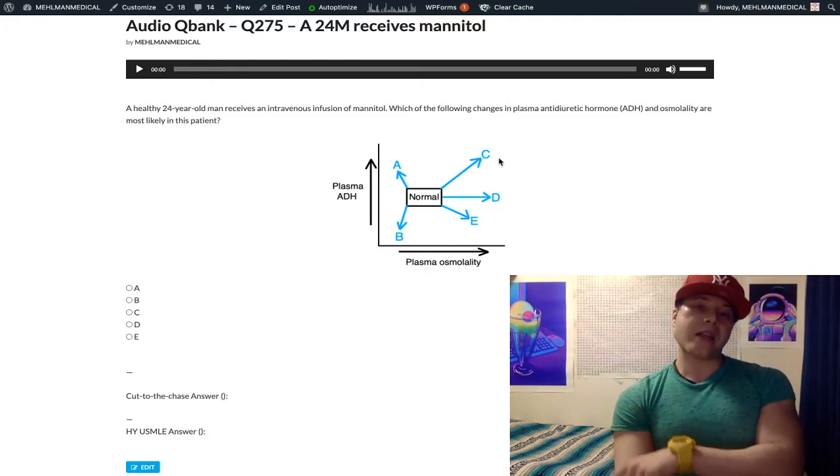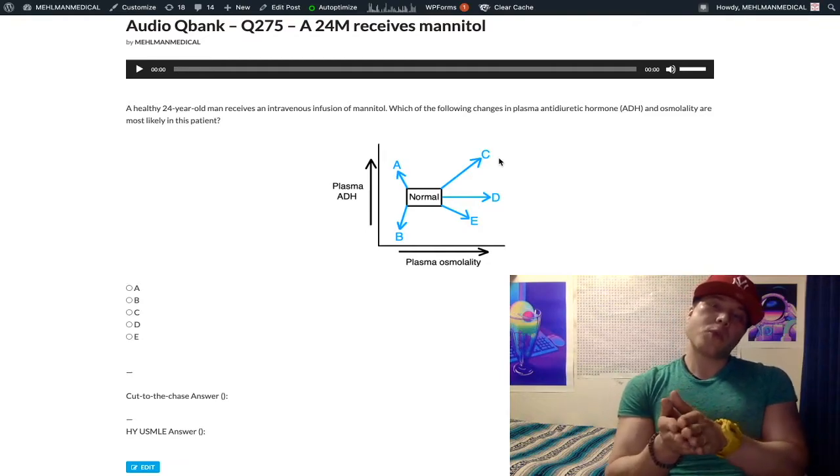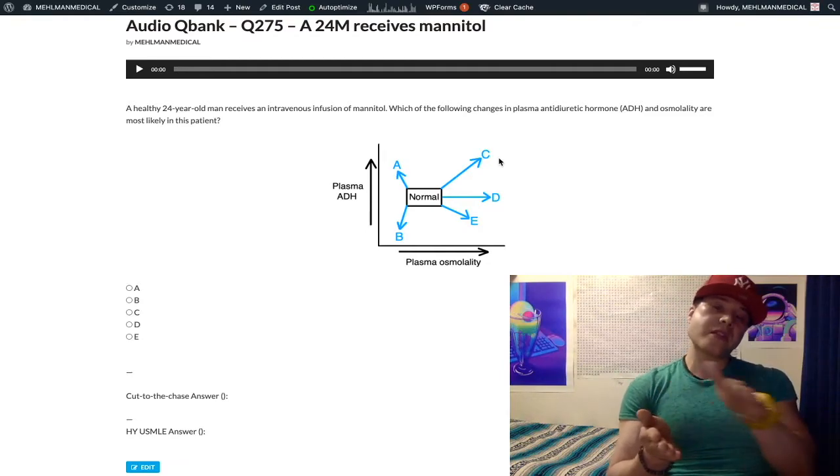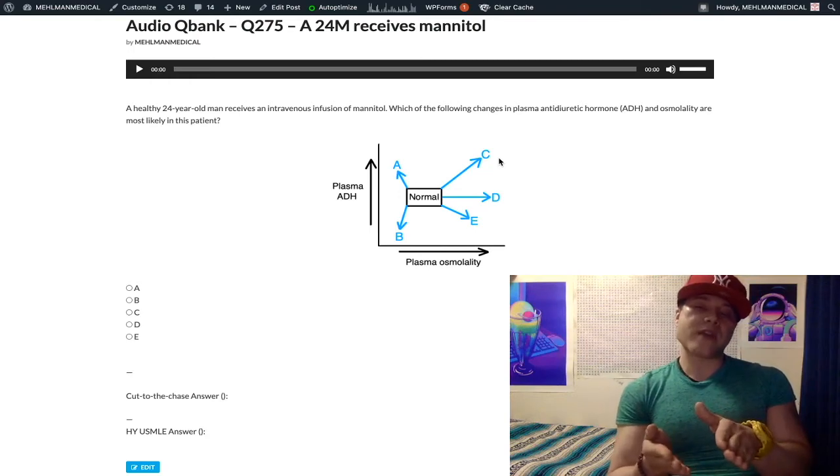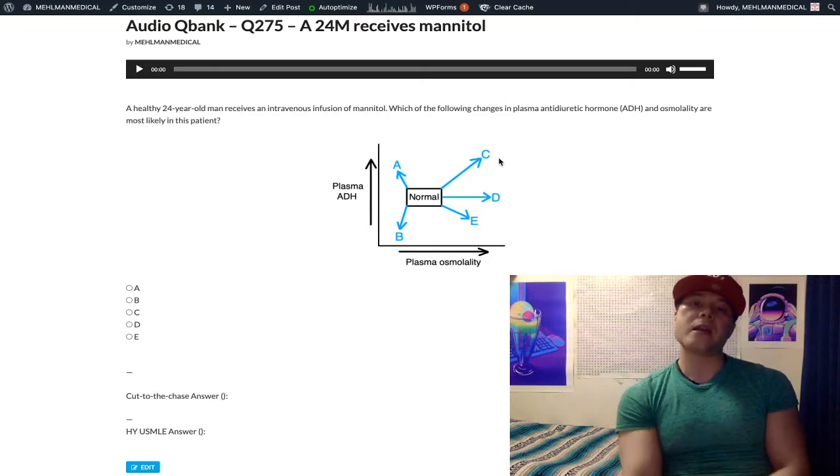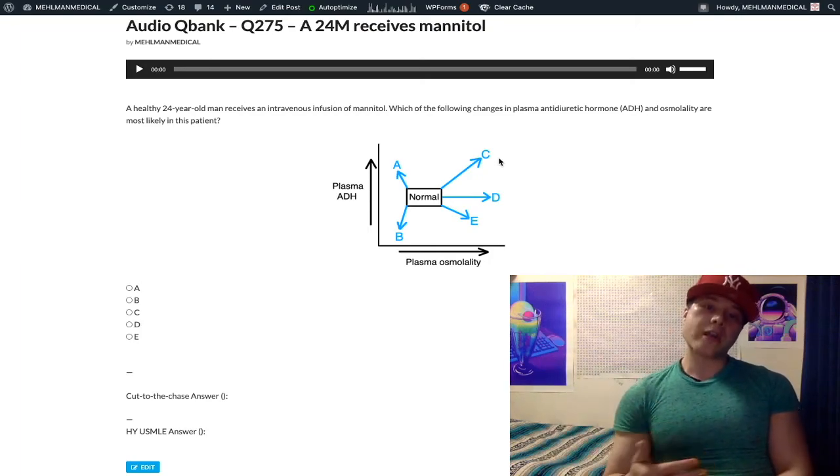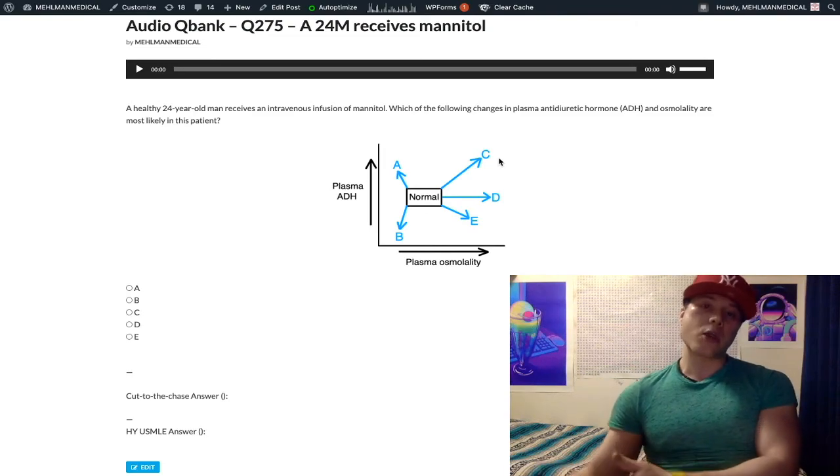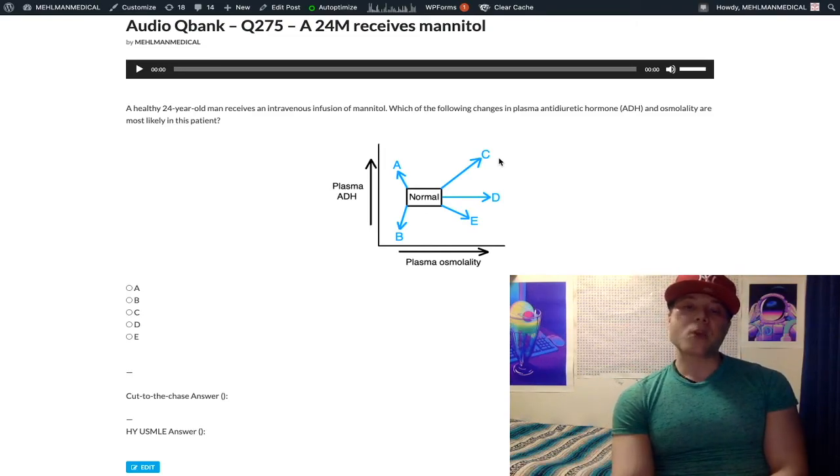If that is not labeled, then you can just choose the proximal straight tubule, which is immediately before the thin descending loop of Henle. And if that's not labeled either, just choose the proximal convoluted tubule. The point being mannitol acts proximally in the kidney. So it'll draw free water into the nephron and increase diuresis, increase excretion of urine that way.